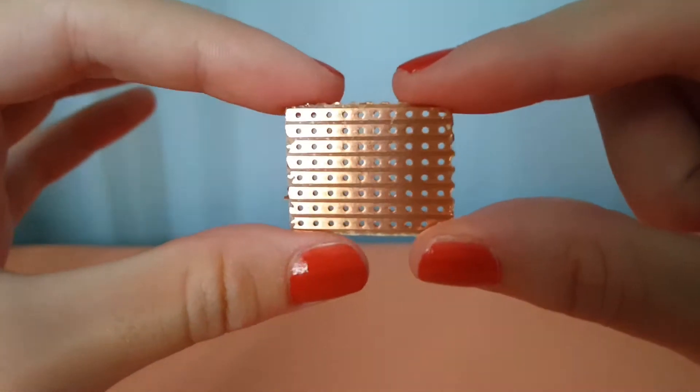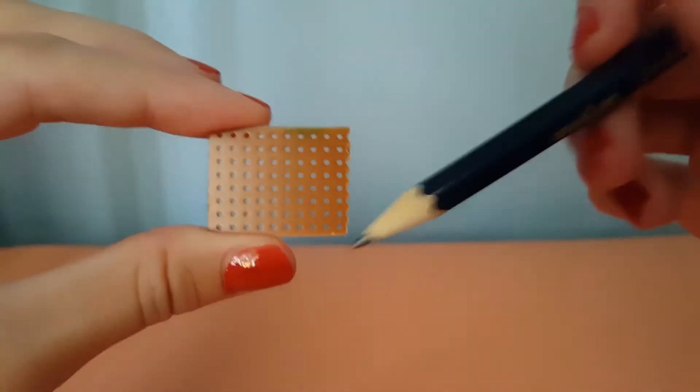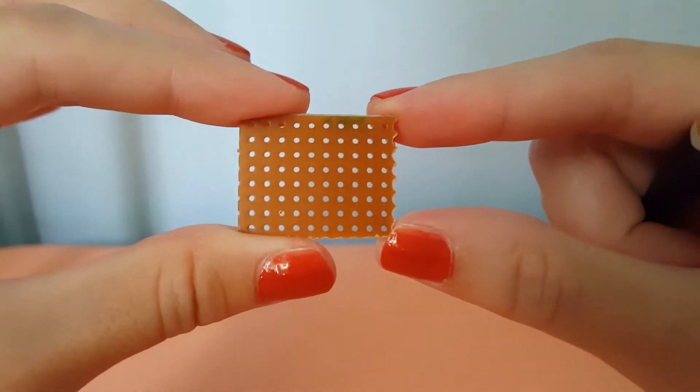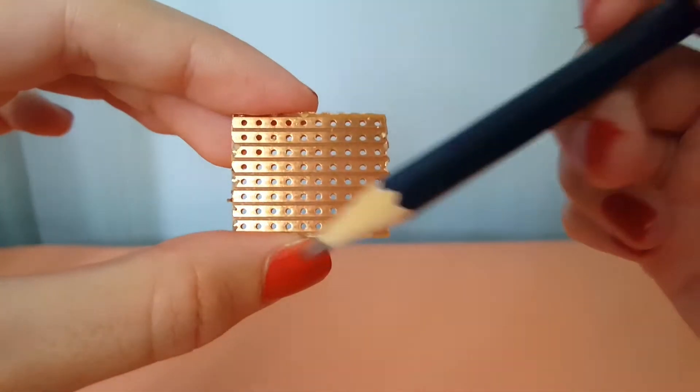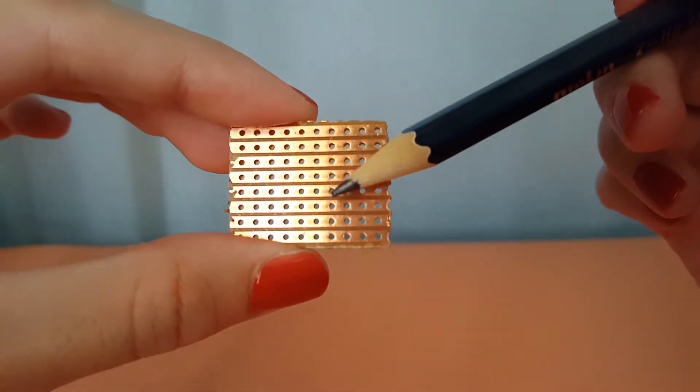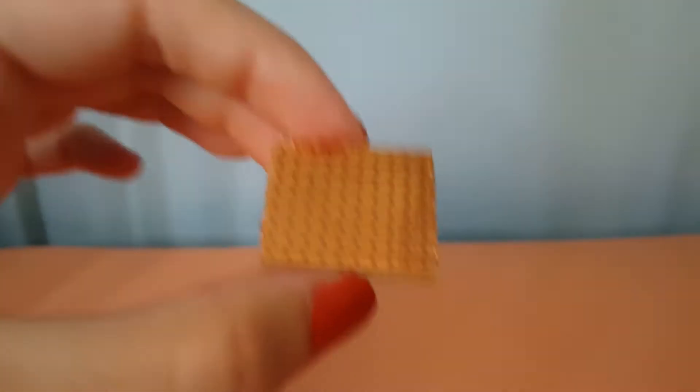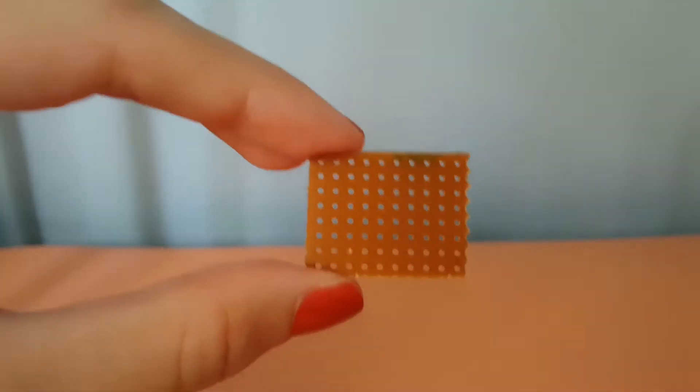The other side of the strip board or vero board is called the component side. This is used for you to insert your components through, and then you solder them on the soldering side. When handling a strip board or vero board, it's always ideal to keep those copper strips horizontally so you would know where the rows are.